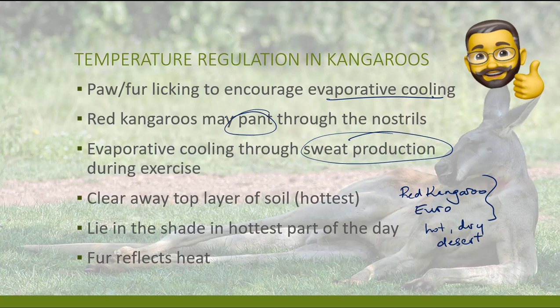Red kangaroos may also pant, and sometimes the panting happens with their mouths closed — through the nostrils — which also have moist surfaces, providing another way evaporative cooling can occur. A behavioural adaptation is that kangaroos will sweep away the hot top layer of sand before lying down, since desert sand can get extremely hot on the surface, to access the cooler layer underneath. They also lie in the shade during the hottest parts of the day and tend to be more active during the cooler parts of the day.